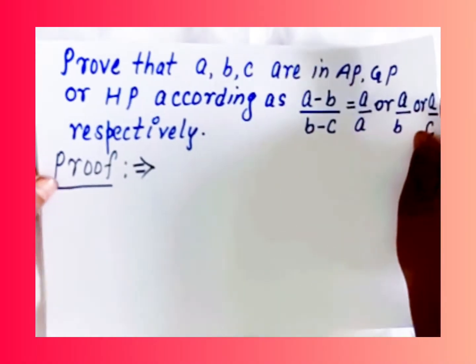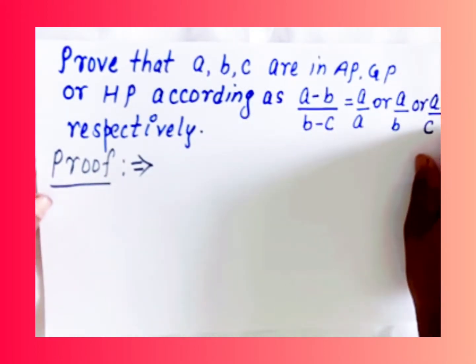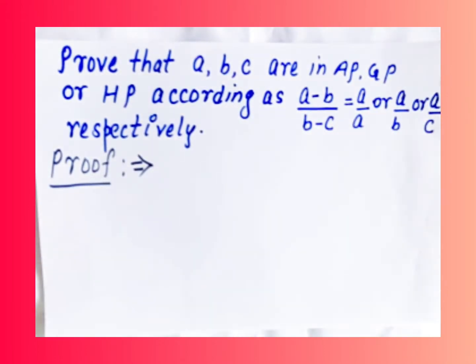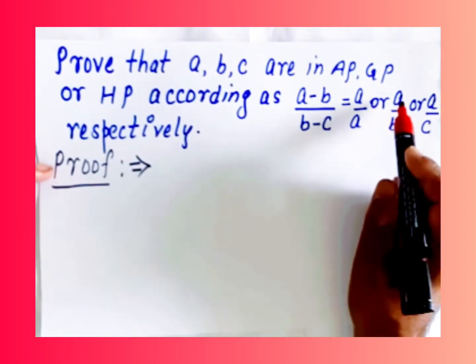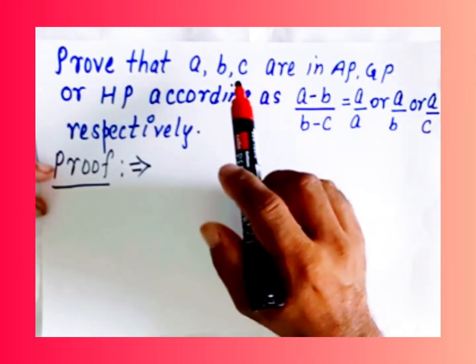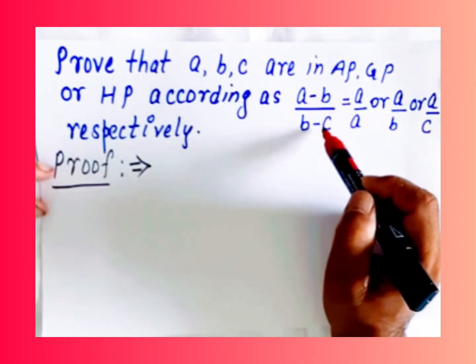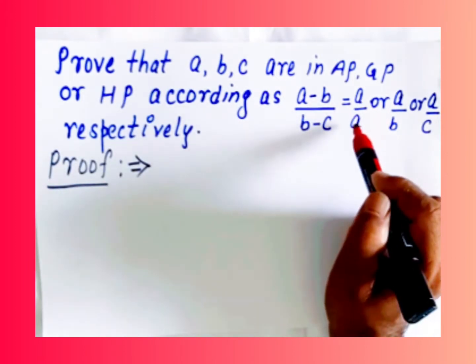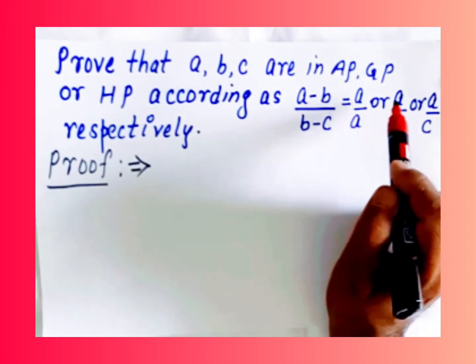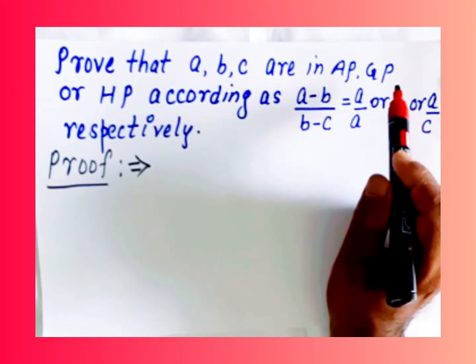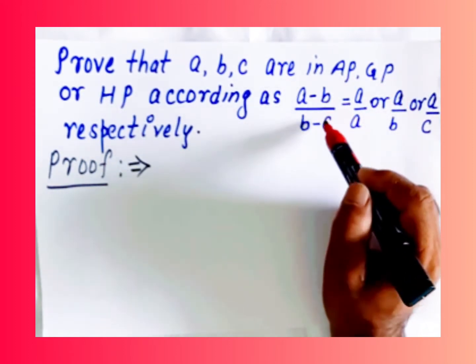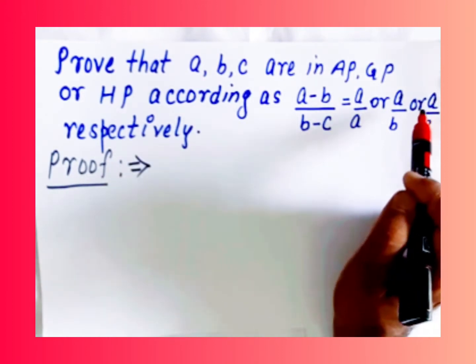Now see the equations. The question is: we have to prove that A, B, C are in AP, GP, or HP according as (A minus B) upon (B minus C) is equal to A/A, A/B, or A/C respectively. So we have to prove each of these three cases.